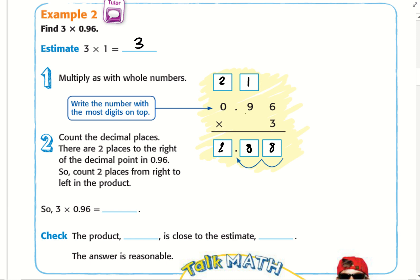How do I know that? Look here at the decimal place. I have two places to the right, so I'm going to move my decimal two places to the left: 1, 2. My answer is 2.88.